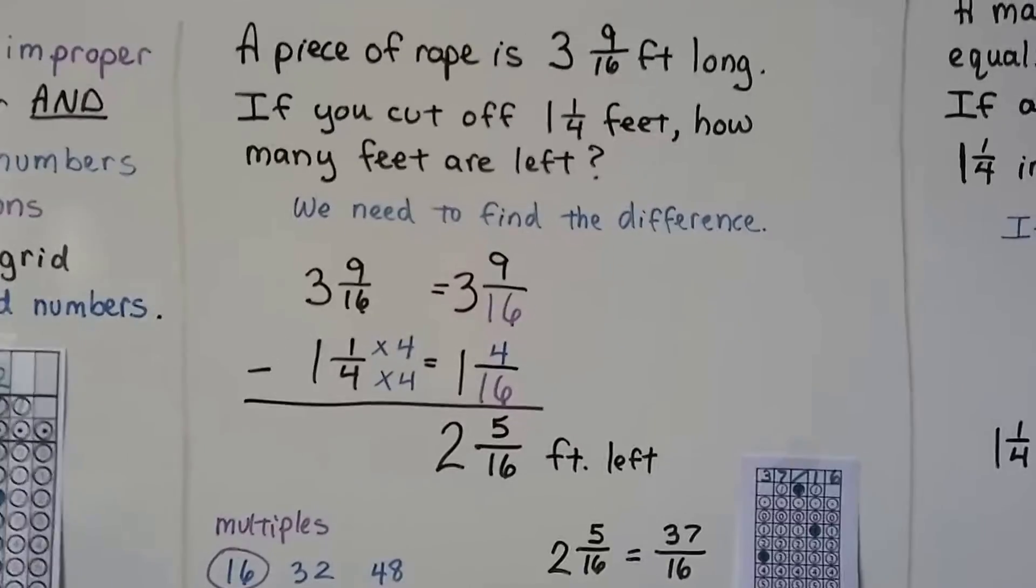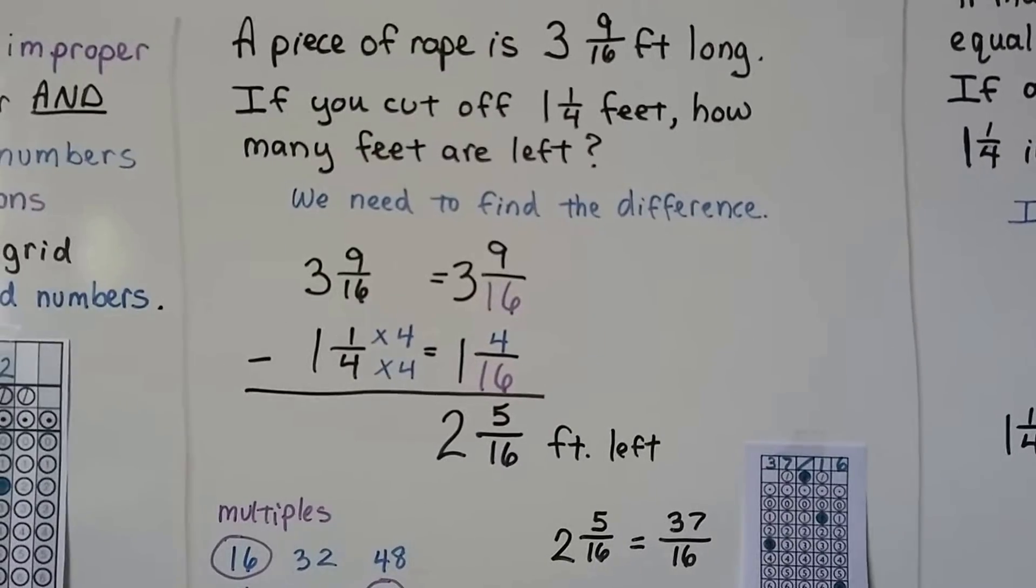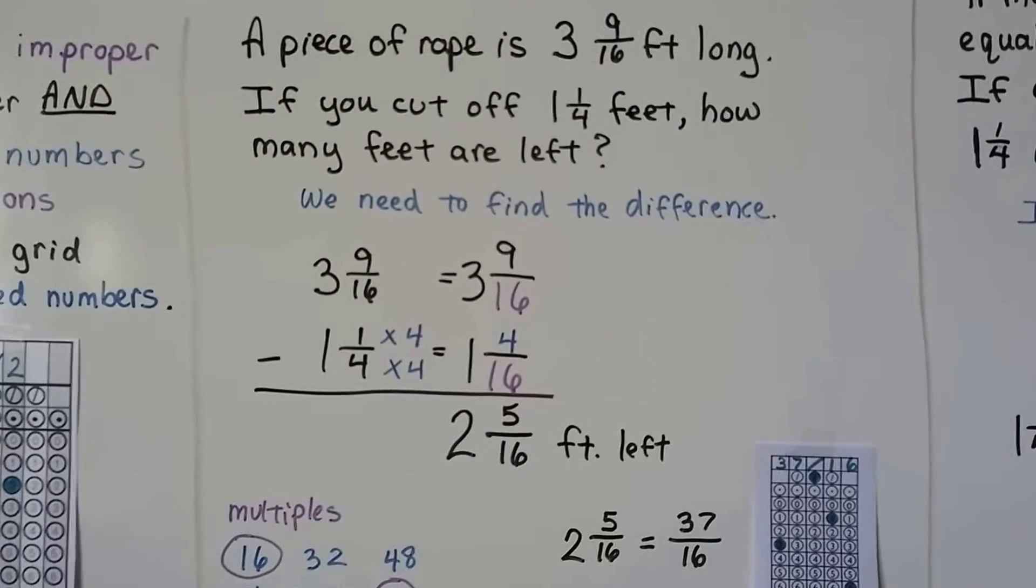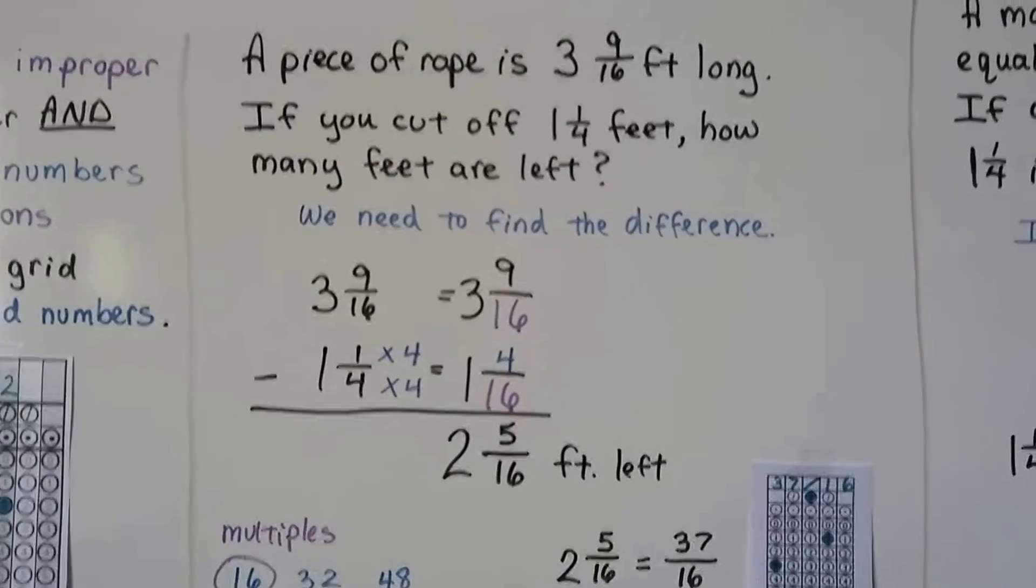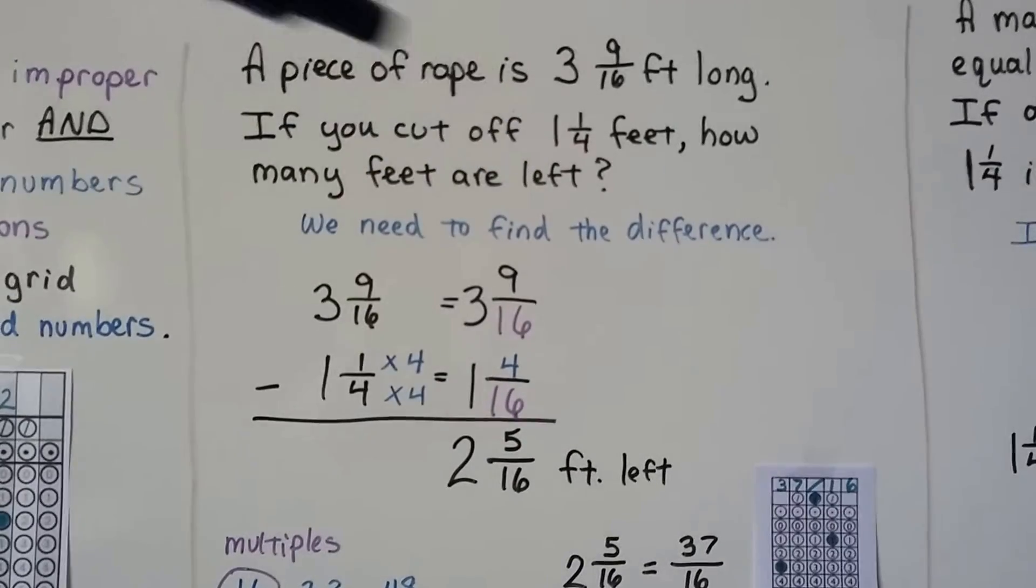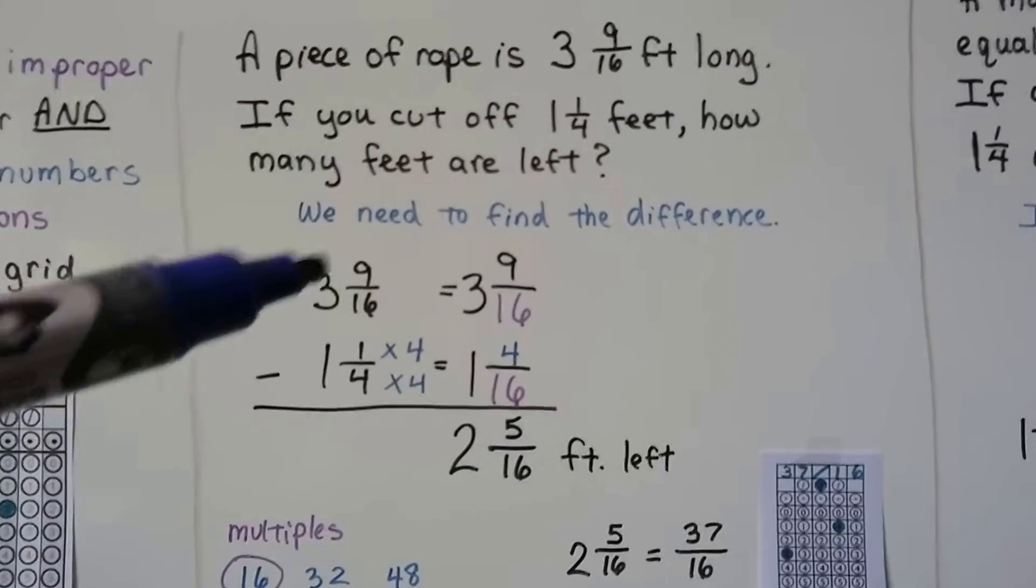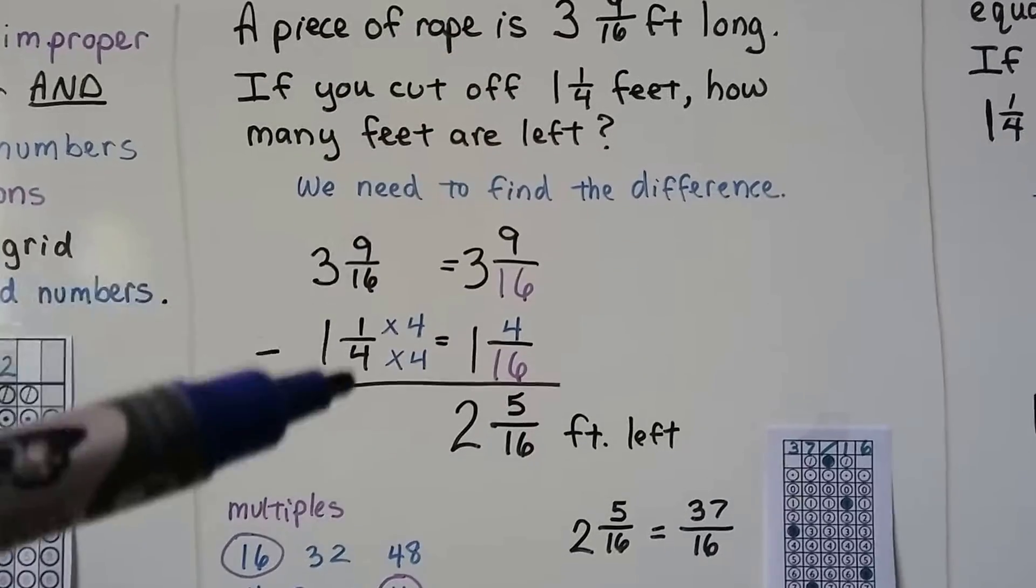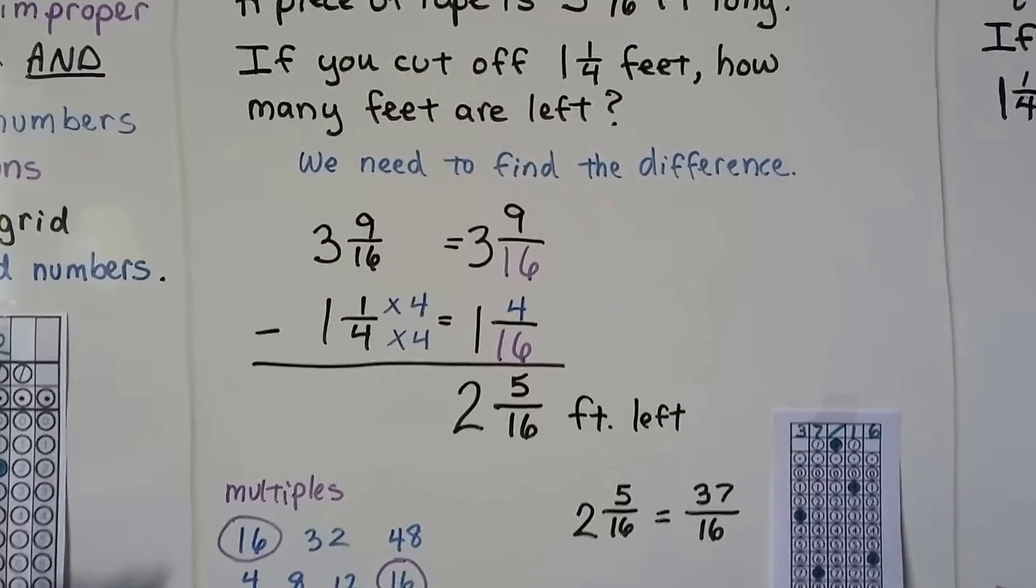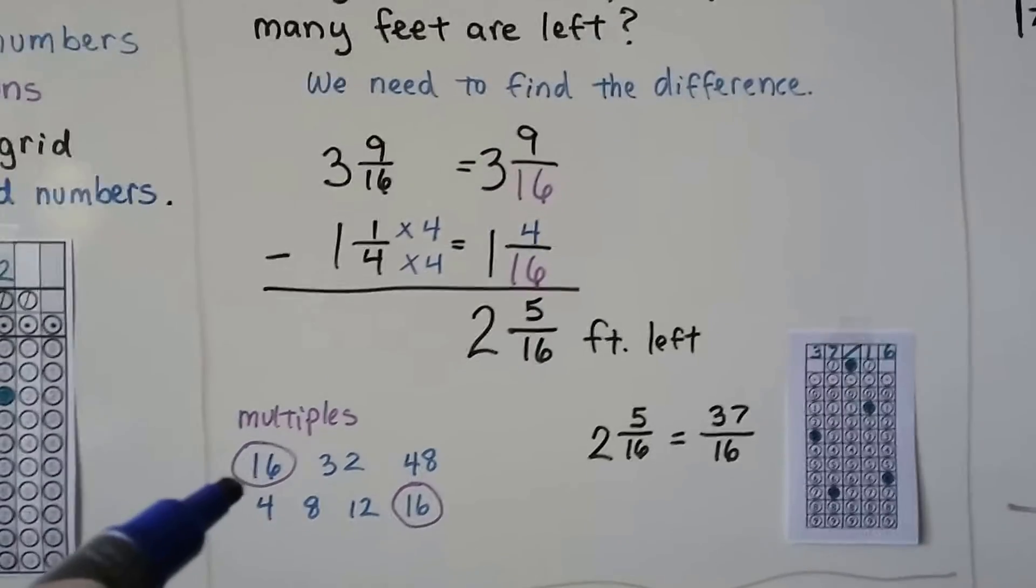Here's our first problem. A piece of rope is 3 and 9/16 feet long. If you cut off 1 and 1/4 feet, how many feet are left? We need to find a difference. It says how many are left, so we need to do subtraction.